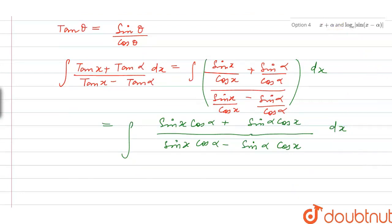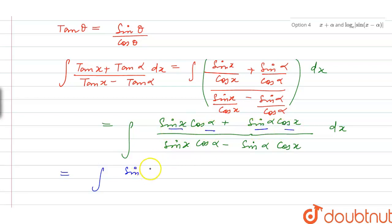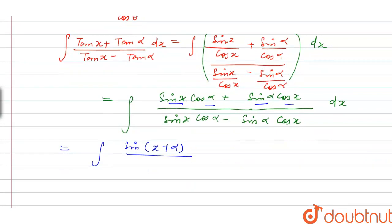We can simplify this further. The numerator sin(x)·cos(α) plus cos(x)·sin(α) matches the form sin(A)cos(B) plus cos(A)sin(B), which equals sin(A+B). So this is sin(x + α). The denominator sin(x)·cos(α) minus sin(α)·cos(x) equals sin(x − α). So the integrand becomes sin(x + α) divided by sin(x − α) dx.